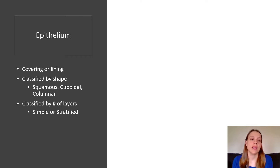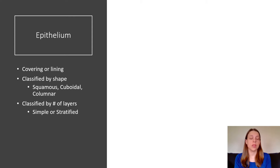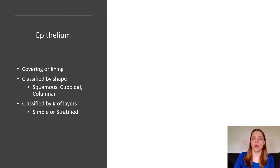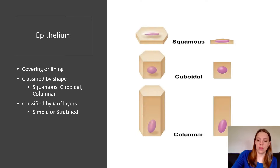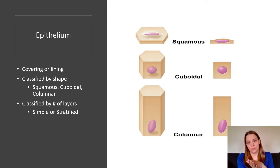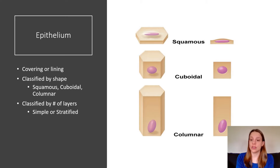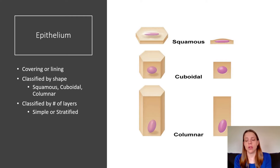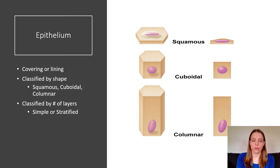When we're naming epithelium, we name it by its shape. We could say squamous, cuboidal, or columnar. Squamous is squashed — it's a flat shape. Cuboidal means cubes, squares. And columnar — columns — they look like rectangles under the microscope.